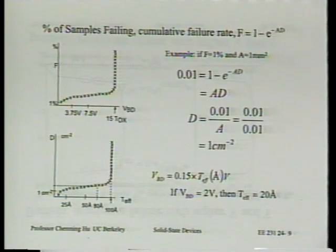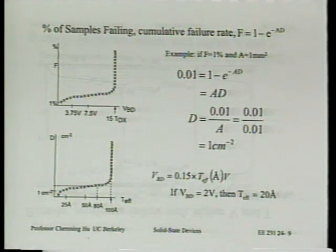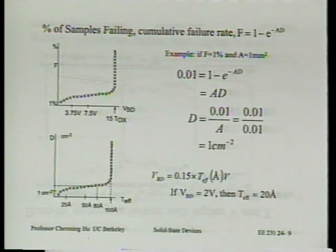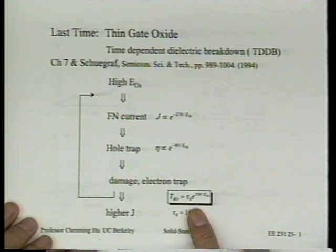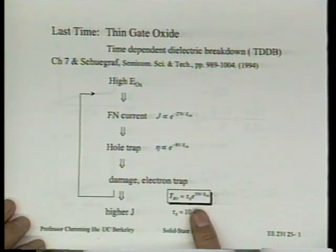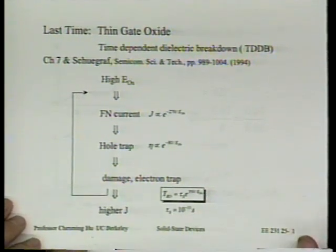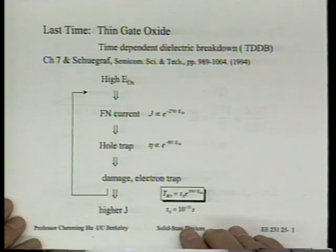A question about whether CVD oxide has worse quality compared with thermal oxide. The basic fundamental observation is that SiO2, whether thermally grown or CVD oxide, after sufficient annealing or densification, has nearly identical dielectric properties. The lifetime equations apply whether we're talking about thermal oxide or CVD oxide — this often comes as a surprise. Defect density, however, is another matter; it's dependent on the equipment and actual conditions.